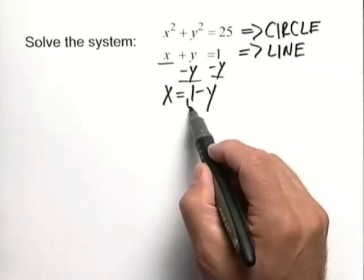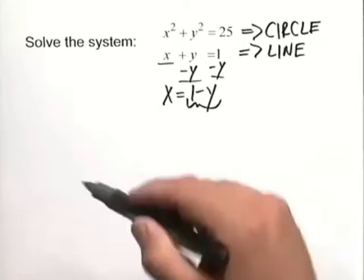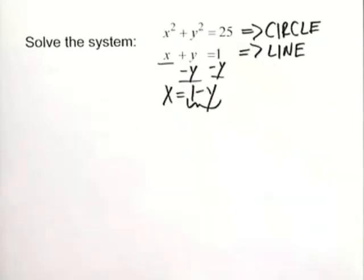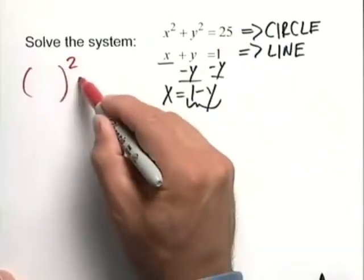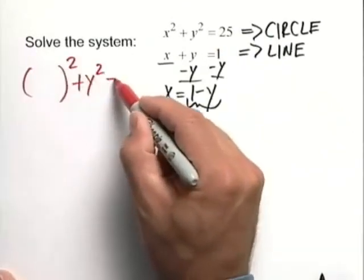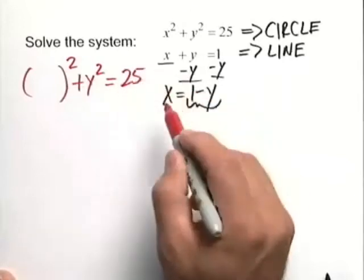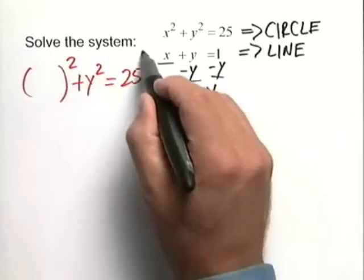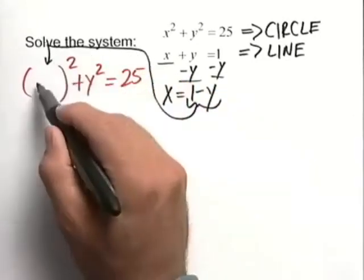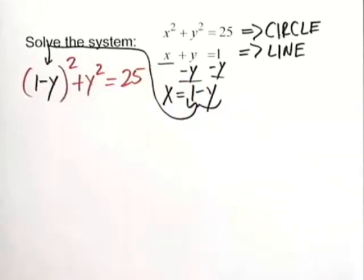Now what we'll do is we'll take this expression 1 minus y and substitute that in for x into the first equation. So if you look at our first equation here, it looks something like the following. x quantity squared plus y squared is equal to 25. Now we're going to take this 1 minus y and drop that in over here so we get 1 minus y the quantity squared. And we have the desired result in that we have our equation in terms of y and y only.